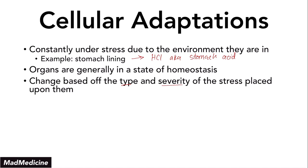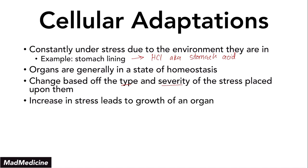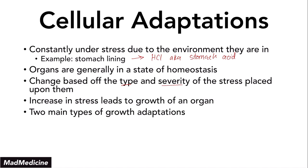This is eventually going to lead to growth of an organ via two main growth adaptations we've discussed in a previous video: hypertrophy and hyperplasia. These are ways for our cells and organs to grow in size — specifically by growing in the number of cells and growing in the size of cells — especially during the time that our organ or tissue is under a stressful period.